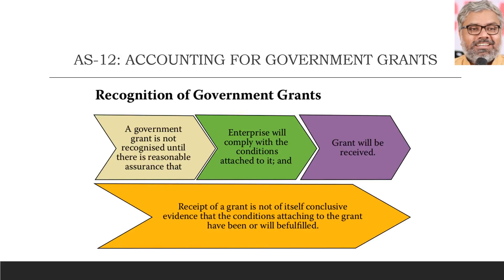Now look at government grant recognition — when can it happen? A government grant is not recognized until there is reasonable assurance. Government grant cannot be recognized as a benefit in the books of accounts until there is reasonable assurance that the enterprise will comply with the conditions attached to it. And most importantly, there should be reasonable assurance that the grant will be received — that is also a very important condition.